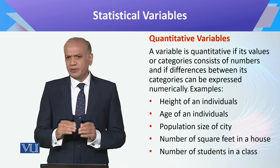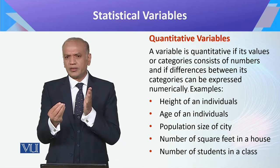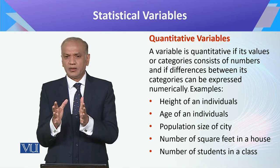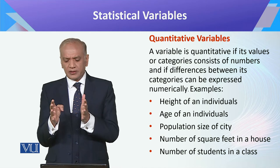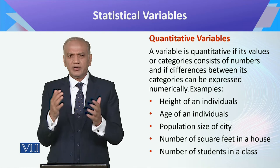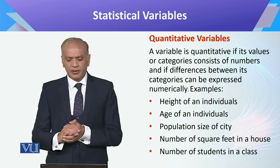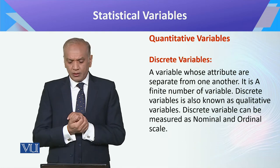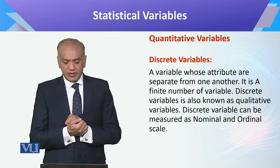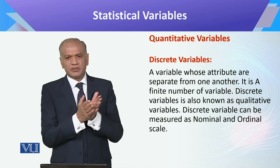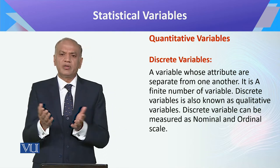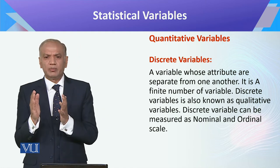Quantitative variables, as I mentioned, are things we can count in terms of numbers — what is the quantity of something. For example, individuals' height, weight, population in a city — these are all our quantitative variables. Then within these come discrete and continuous. Discrete variables — for example, number of persons can be one or two, but not one-point-two or one-point-five. So these are discrete variables.